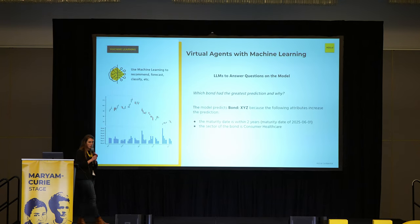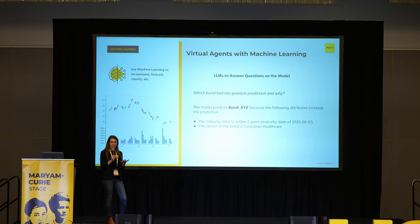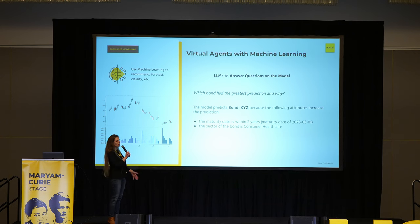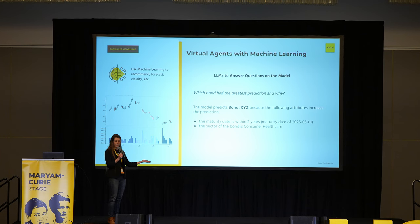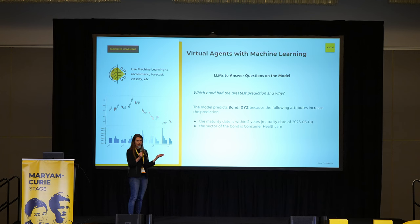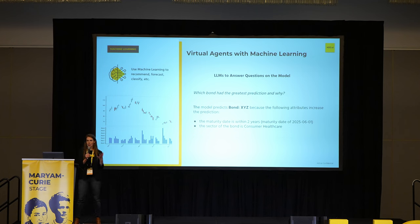One thing we haven't talked much about yet is how LLMs can be combined with machine learning. We can ask questions on unstructured data documents, but we can also ask questions about a model — a machine learning model for recommendations, forecasting, or classification. With large language models, we can not only tell the LLM to build a model, but also to explain the model: why is this bond recommended, giving it in human-understandable form.